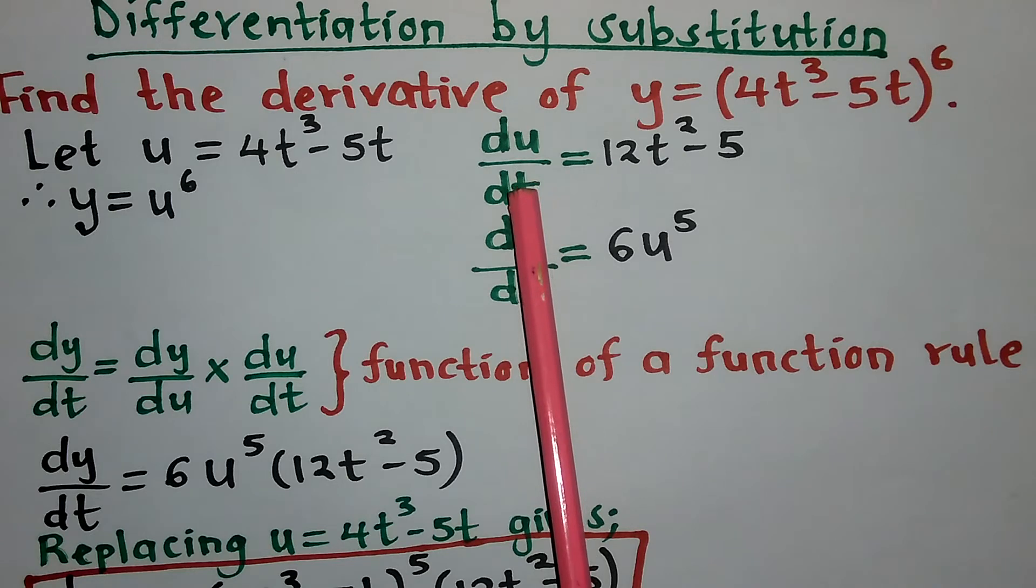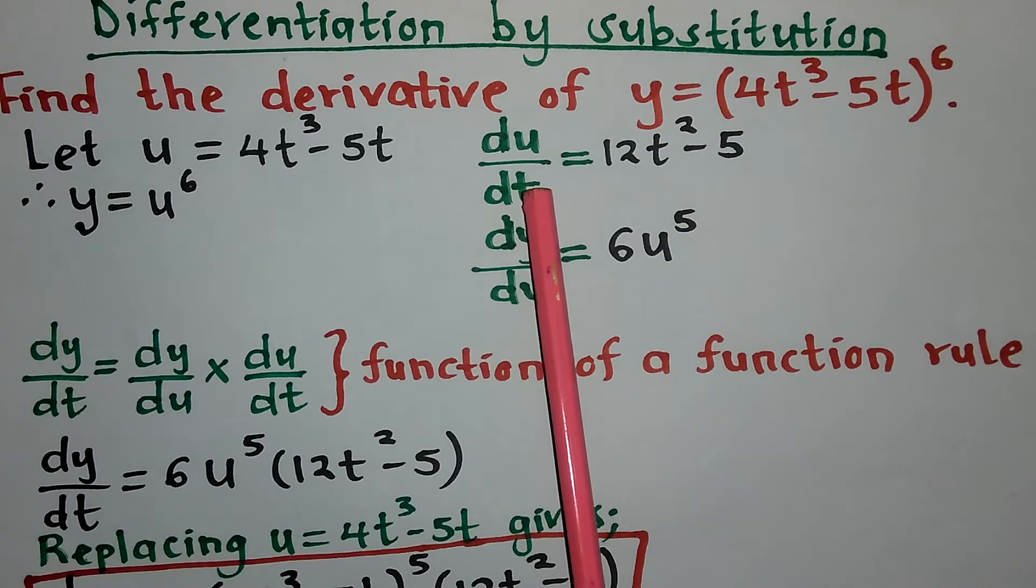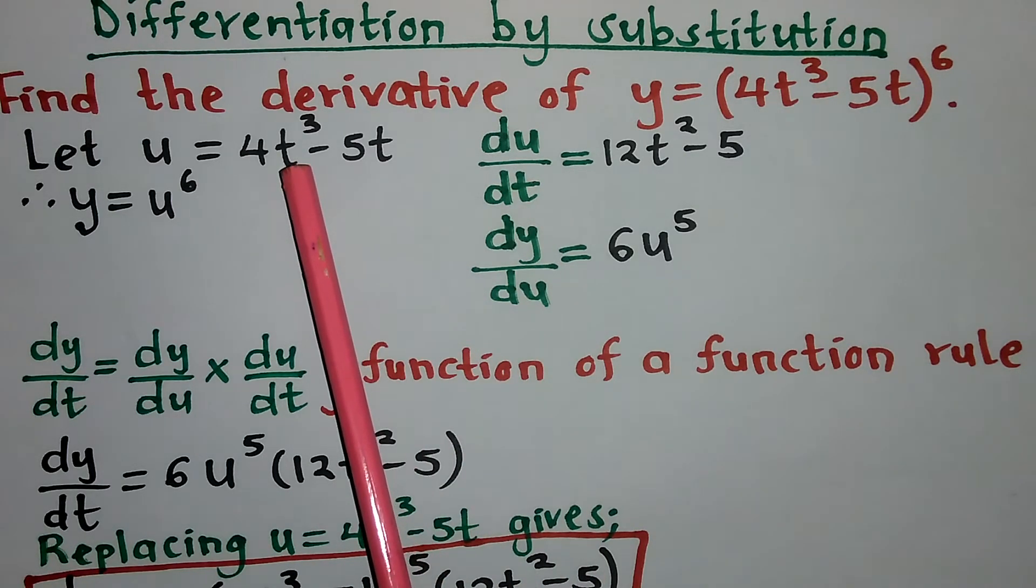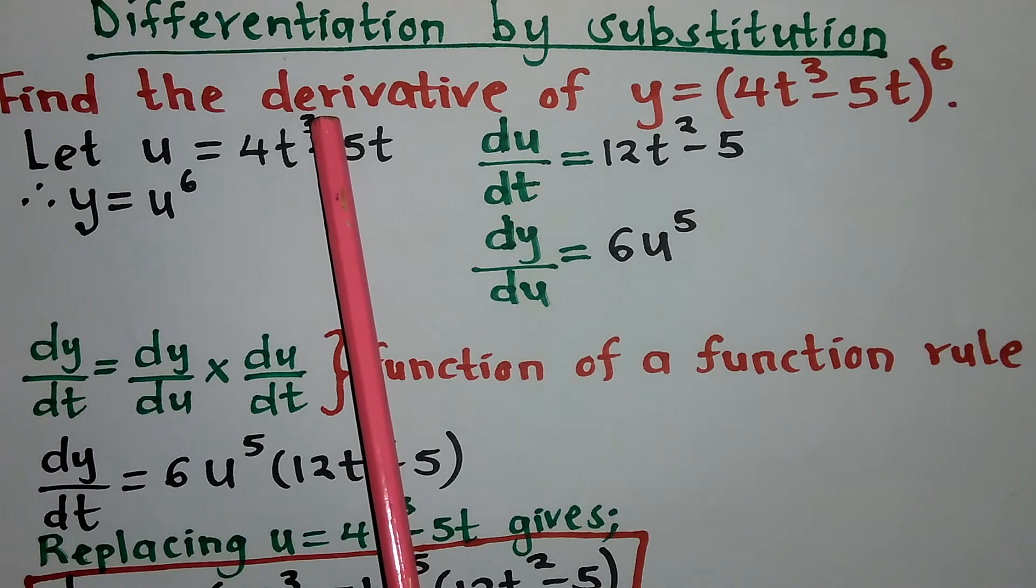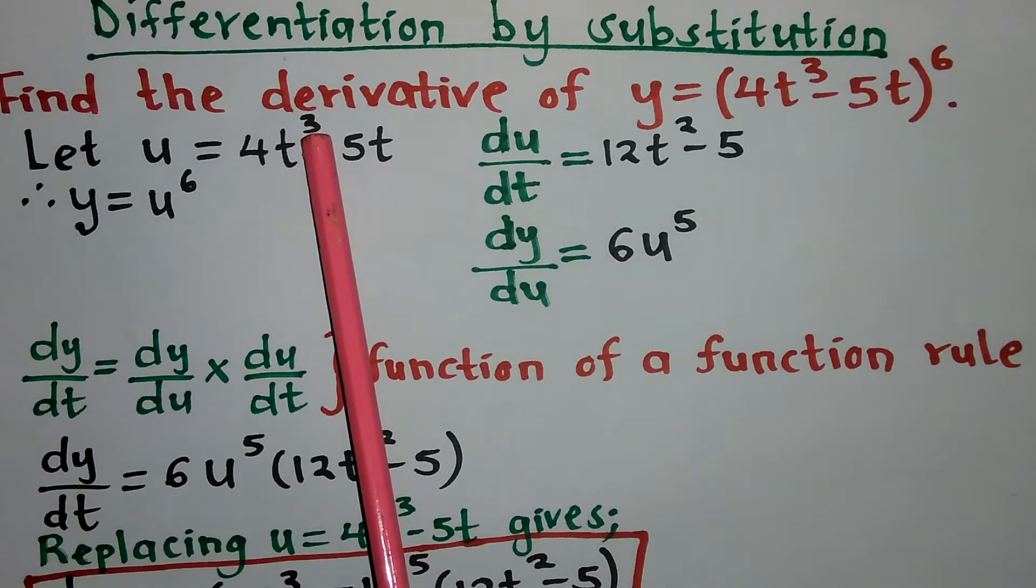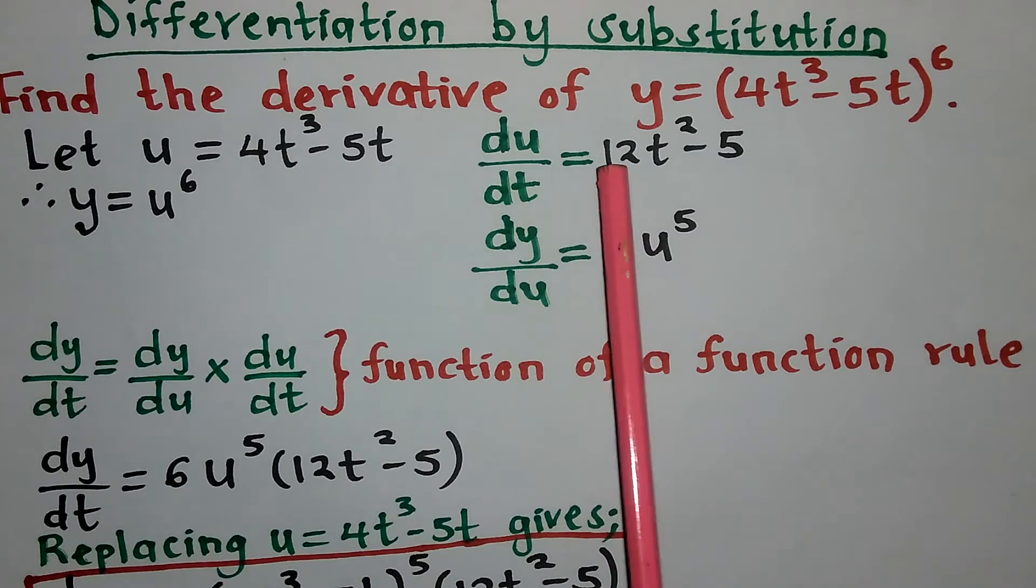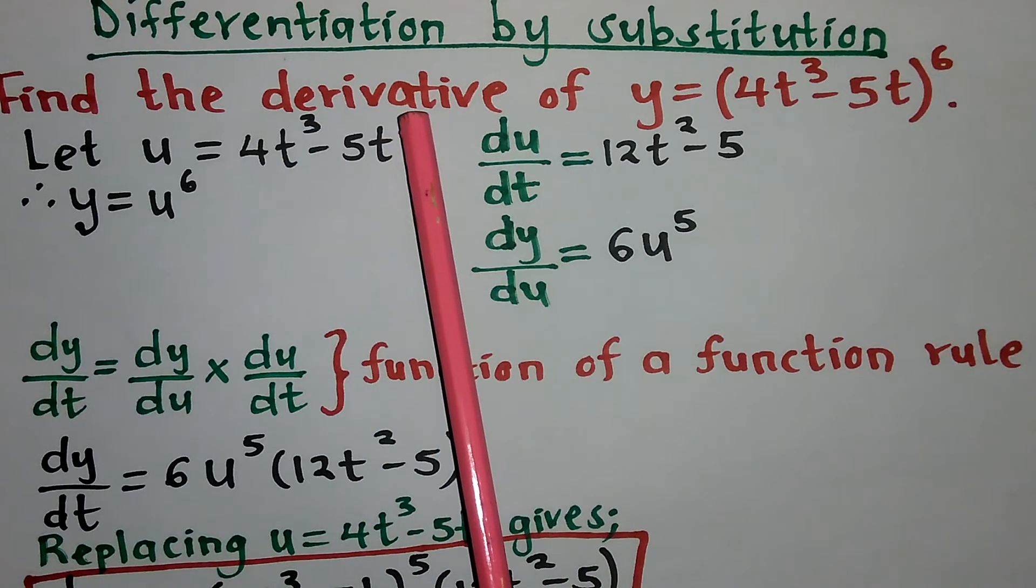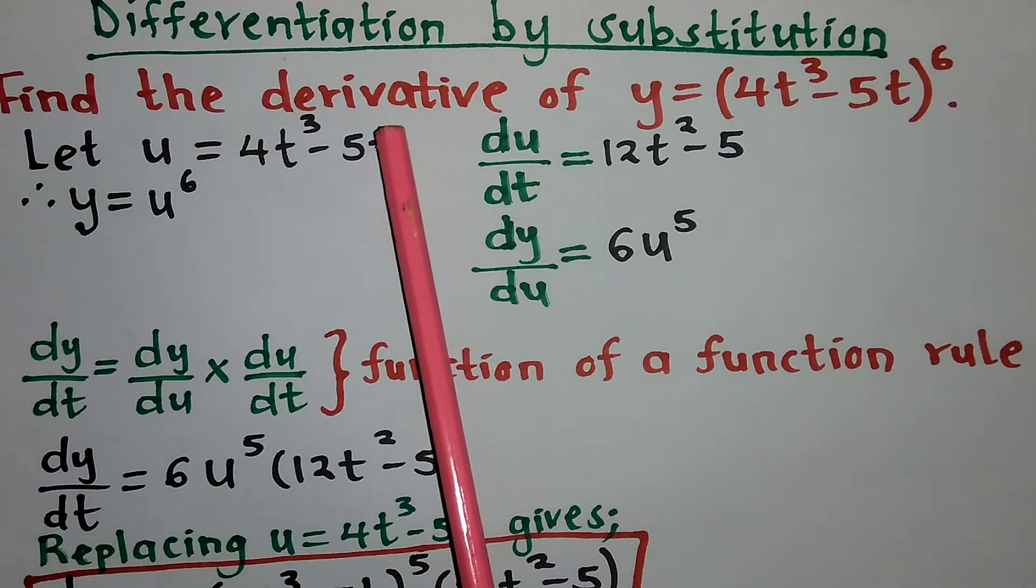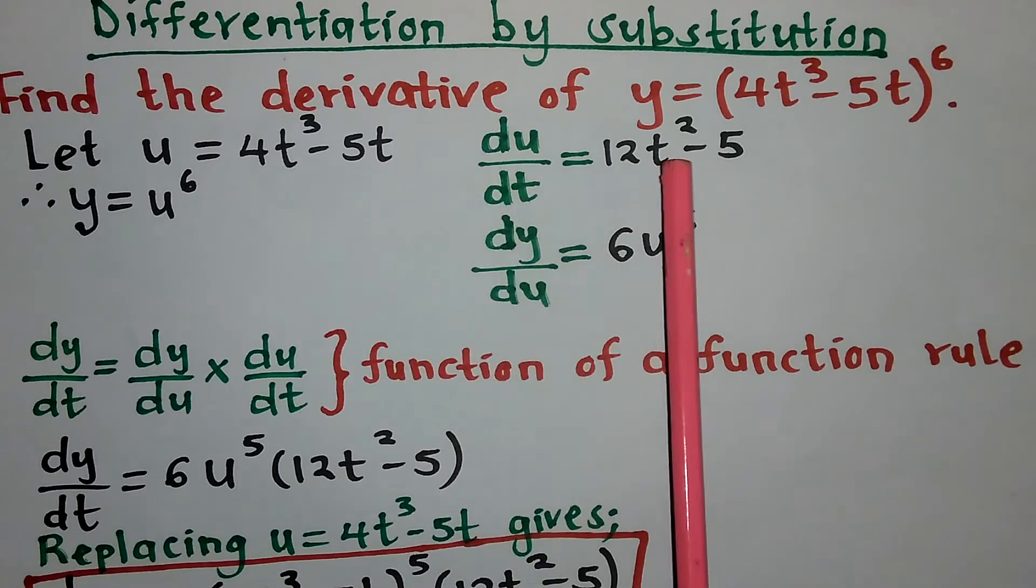Find the derivative of u with respect to t. The derivative to this: we see 3 minus 1 you get 2, and 3 times coefficient 4 you get 12t². 1 minus 1 will be 0, any number raised power 0 is 1, so negative 5 by 1 will be negative 5.